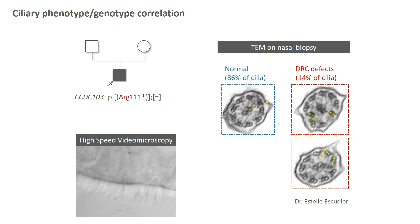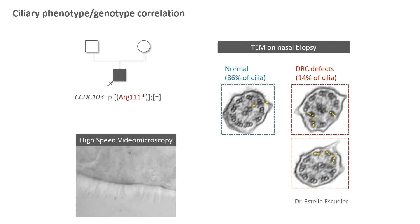In addition, on most of the CT sections you can see that both dynein arms were still attached on the outer doublet. So this was not coherent with CCDC103, which encodes a cytoplasmic protein implicated in the assembly of dynein arms. Patients with mutations in this gene have almost immotile cilia and show an absence of both dynein arms in most of their cilia.